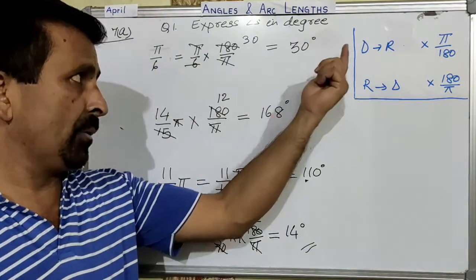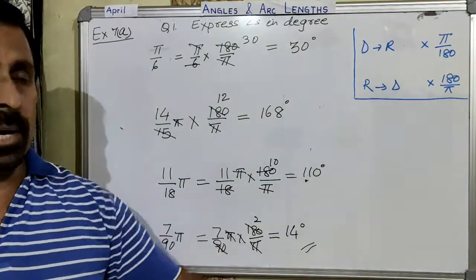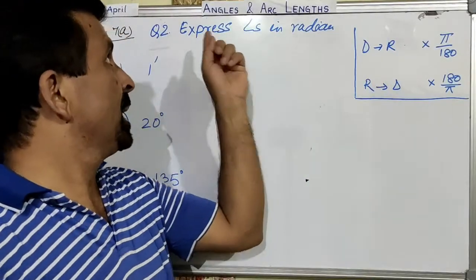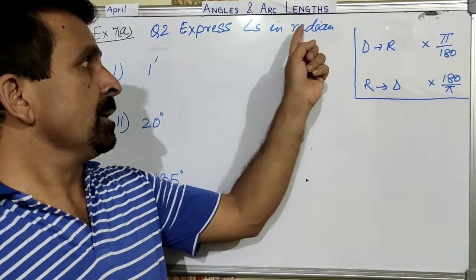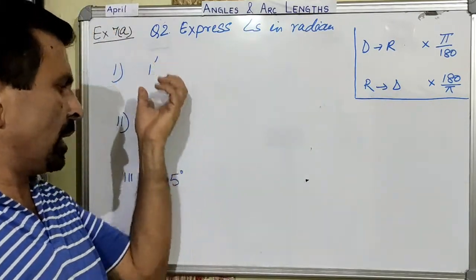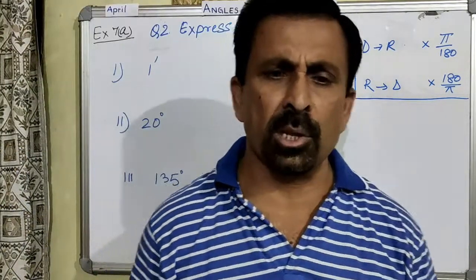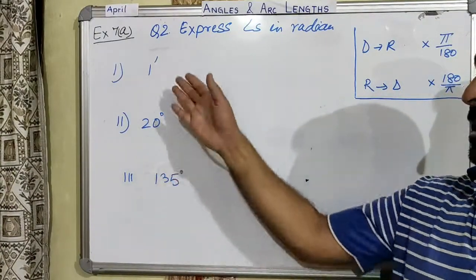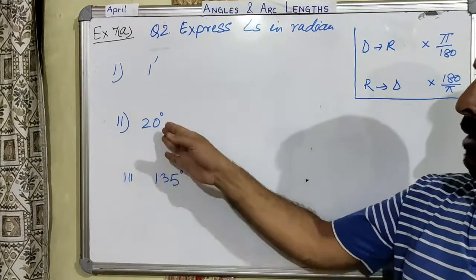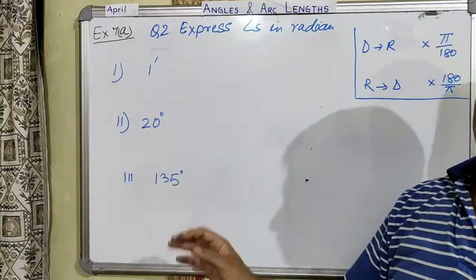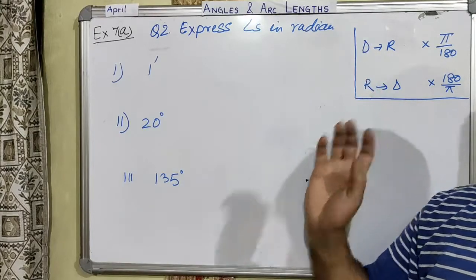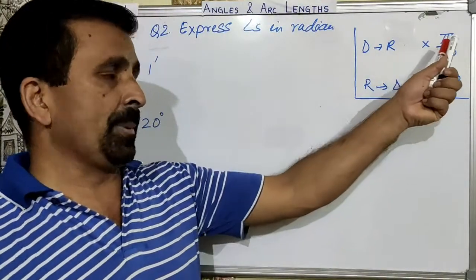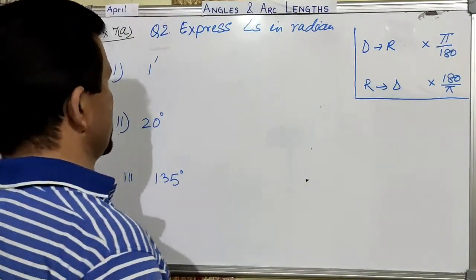We will now see the next question where we convert degree into radian. Please remember which factor we have to multiply. The next question is: express angles in radian. By looking at the angle, you can understand what kind of conversion is needed, because the angle is given in degree or in minutes. For converting degree into radian, you multiply by π over 180.